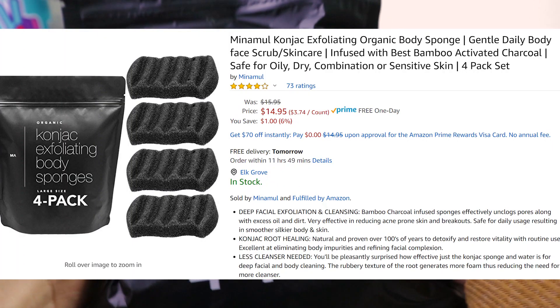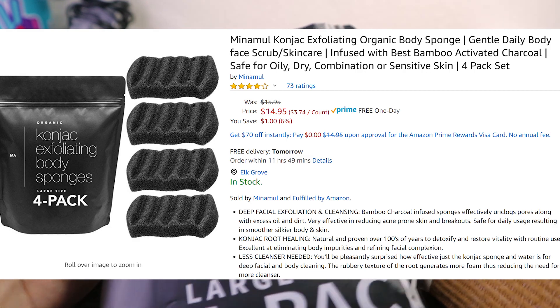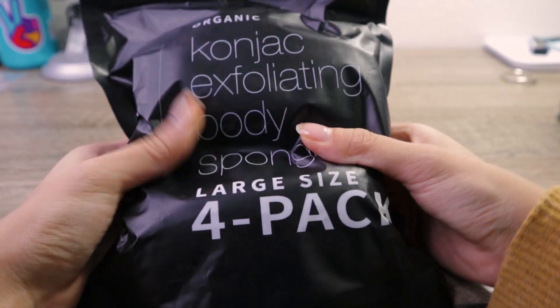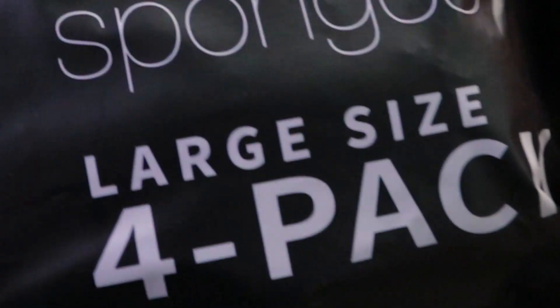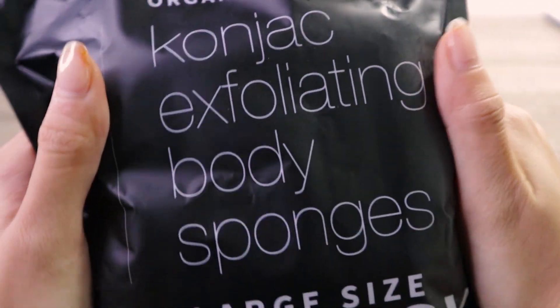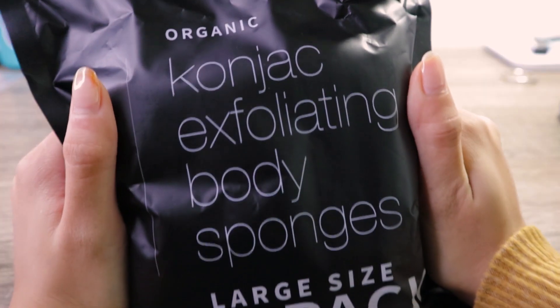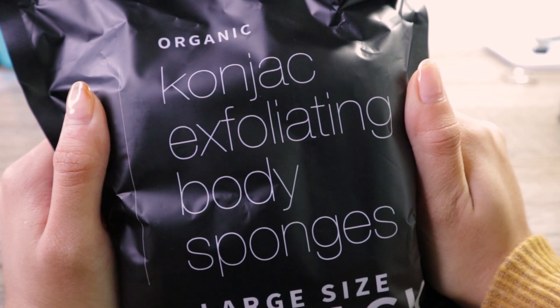It's called the Minimal Organic Konjac Exfoliating Body Sponge, and it's the large size four pack, guys, because this thing lasts for eight months. And I'd like to once again thank Minimal for sending me this package.